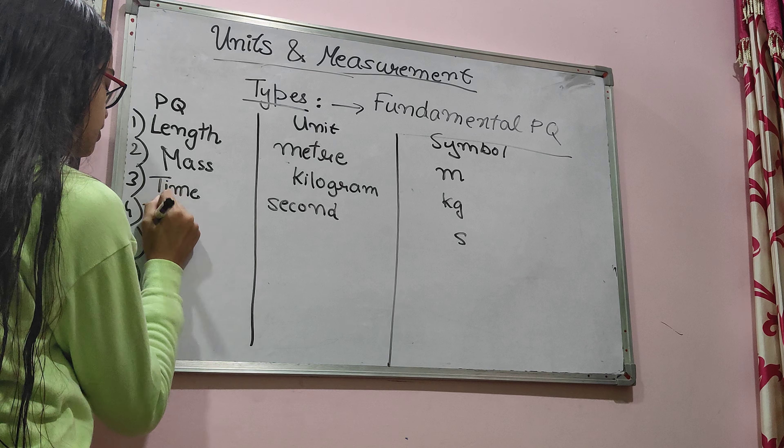Now for the solid angle: imagine we have a cone. The angle forming inside the cone is also called theta. The formula for solid angle is A upon R squared, where A is the area and R is the radius. The unit of solid angle is steradian, represented as sr.